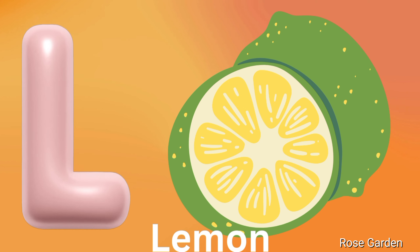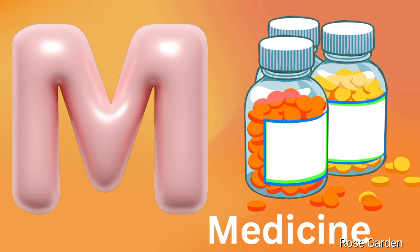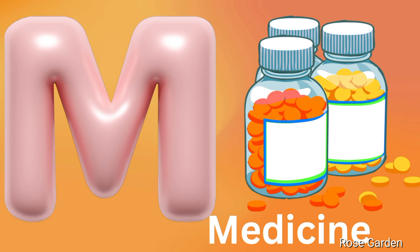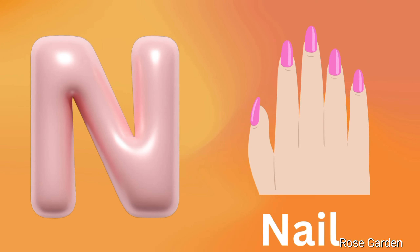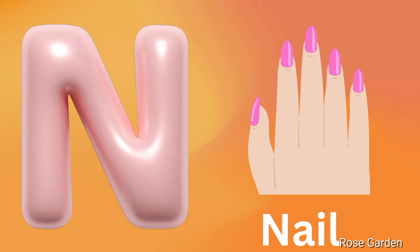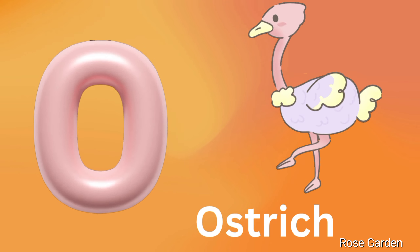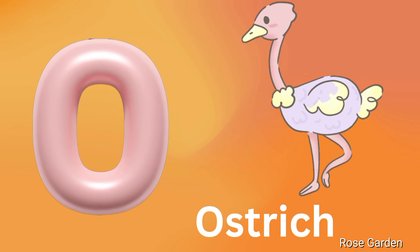L is for Lemon. M is for Medicine. N is for Nail. O is for Ostrich.